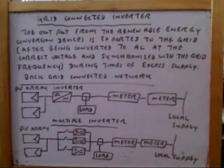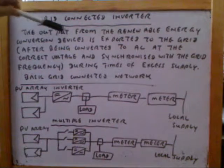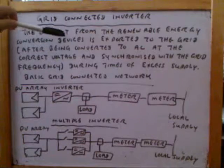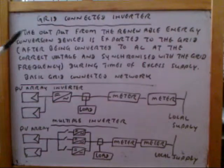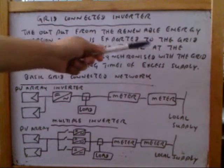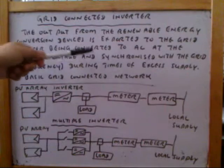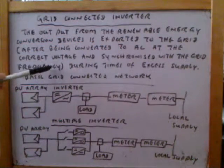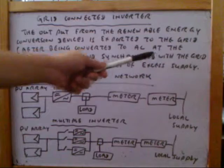So this is for the grid connected inverter. The output from the renewable energy conversion device here is exported to the grid after being converted to AC, and the current voltage is synchronized with grid frequency during times of excess supply.